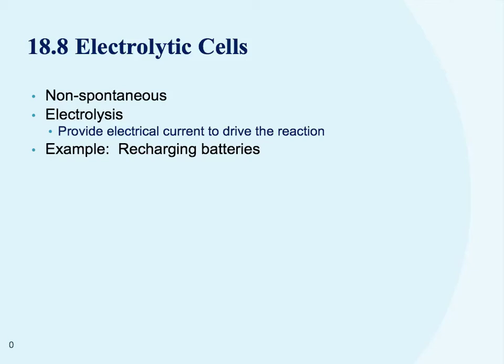Now we want to look at what happens when we have electrolytic cells. These are non-spontaneous reactions — we're looking at electrolysis. We have to provide electrical current to drive the reaction. So instead of lighting a light bulb, we're having to put a battery as some kind of energy source into this cell so that it drives the reaction to happen.